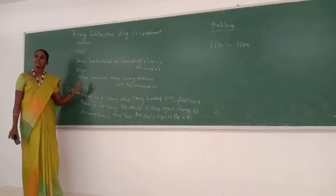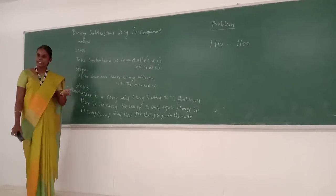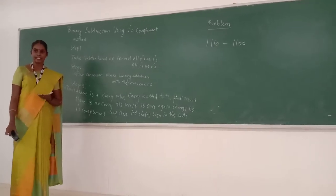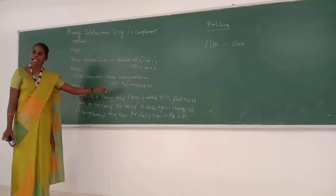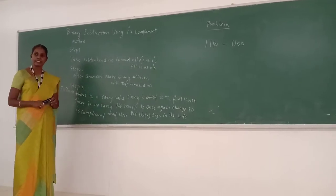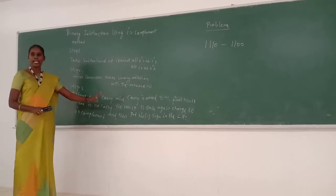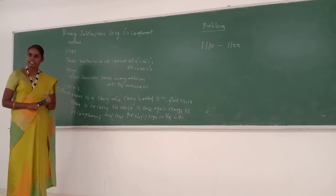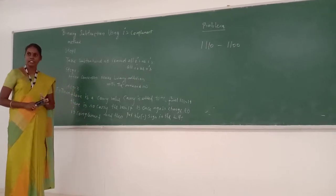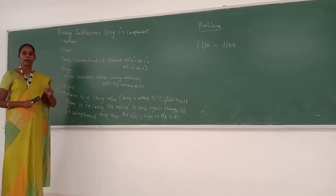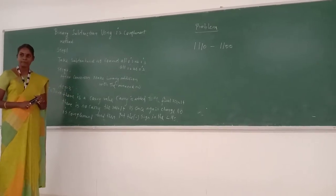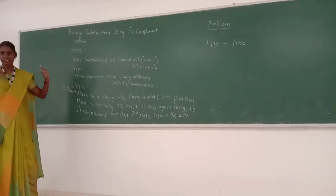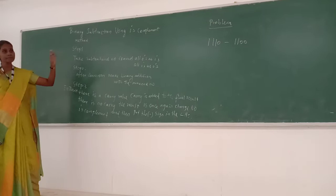Step 3: Based on the result, we may or may not get a carry value. If there is a carry value, carry is added to the final result. If there is no carry value, the result is once again changed using one's complement method — that is, all zeros as ones and all ones as zeros — and then we put the minus sign on the left-hand side. These are the basic steps of one's complement method in binary subtraction.